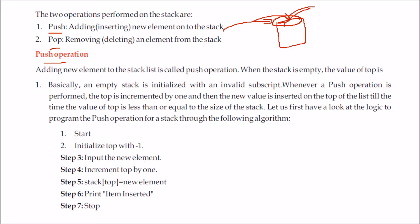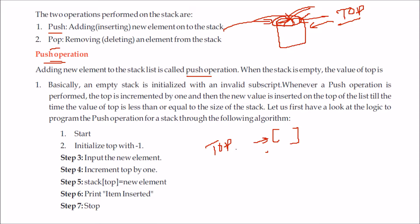What exactly is the push operation? You are adding a new element to the stack list, and we will be implementing this using a list. First, we have to see whether the stack is empty. When the stack is empty, there is nothing in the list. If we have any variable or counter, it is not pointing to anything. We start with the variable top, since we are only interested in the top element. If the stack is empty, we cannot give top the value 0, because index 0 points to the first element but there is none. So we start with top equal to minus 1.